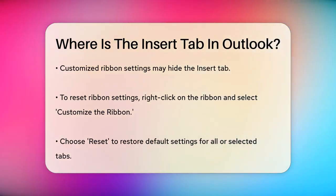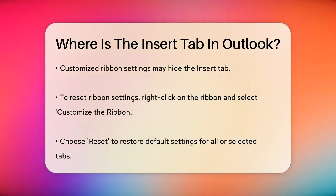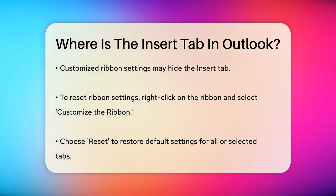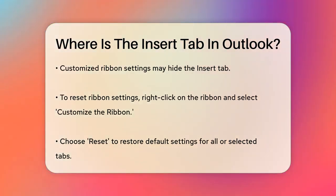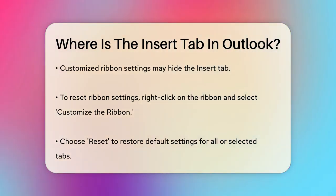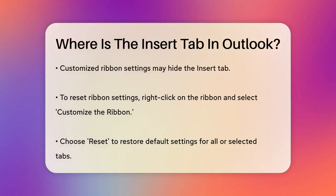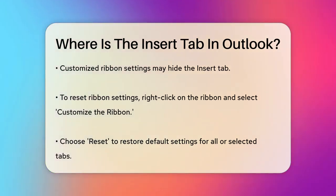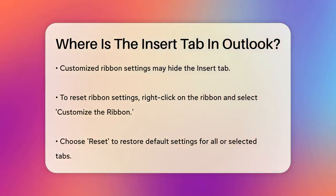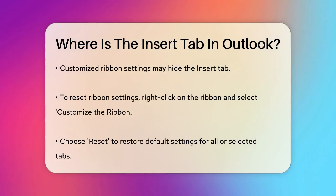If you're still having trouble finding it, here's a step-by-step guide. Click on the New Email button to open a new email window. In this window, you'll see the ribbon at the top with various tabs. The Insert tab should be there, right next to the Home tab.